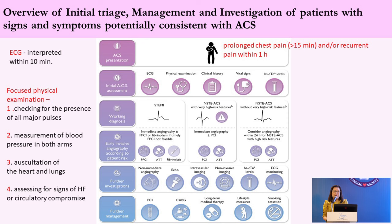If the patient presents with prolonged chest pain of more than 15 minutes or recurrent chest pain within one hour, we must obtain an ECG diagnosis within 10 minutes. At the same time, we take a brief clinical history and focused physical examination, including checking for all peripheral pulses, blood pressure measurement in both arms, and auscultation of heart and lungs for murmurs and crackles, and check for circulatory compromise. We then check hs-troponin level and establish a working diagnosis of STEMI or NSTEMI to decide the immediate angiography, primary PCI, or fibrinolysis strategy.